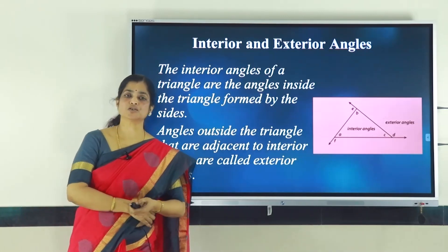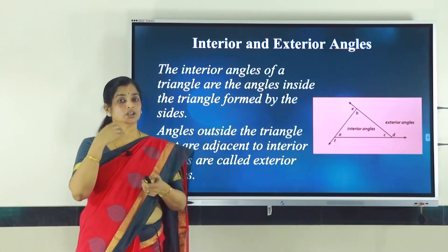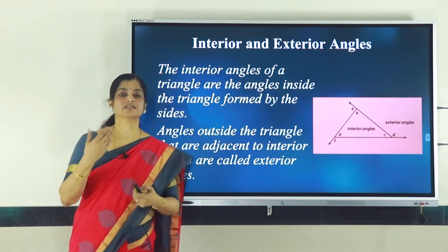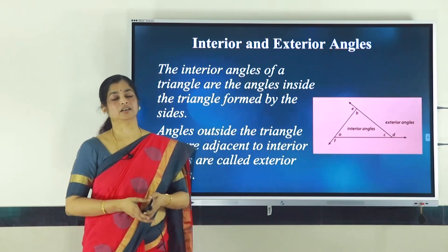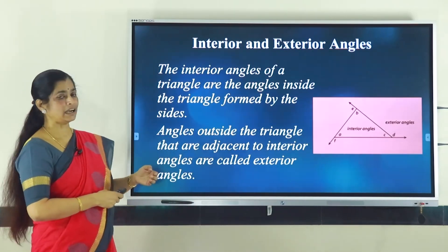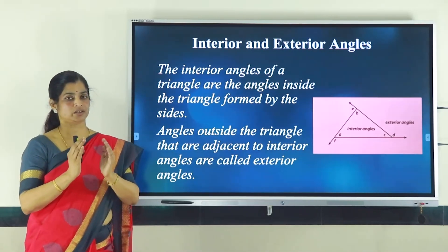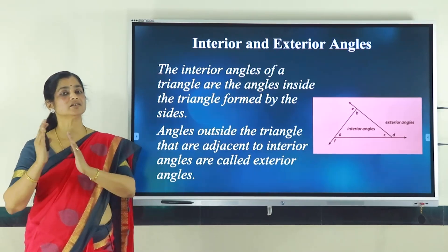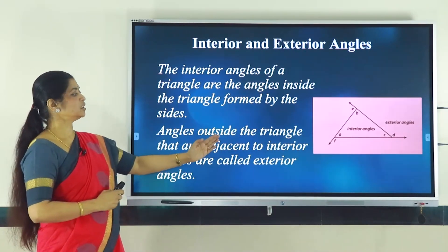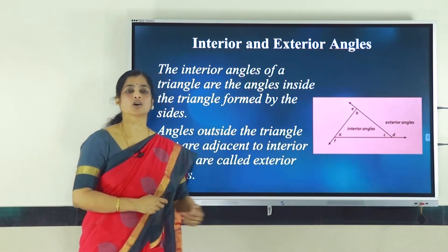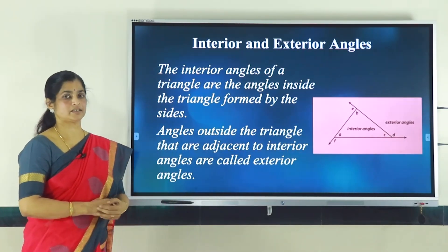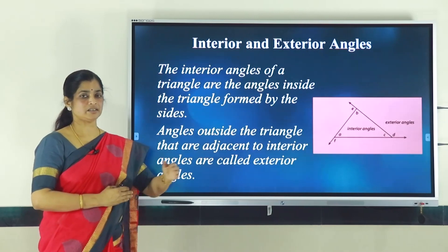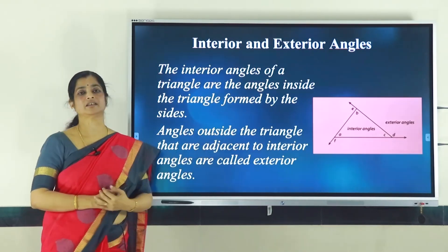Now let us study about the properties of triangle. Before learning the properties, you should know what interior angles and exterior angles of a triangle are. Interior angles of a triangle are the angles enclosed inside the triangle, and the exterior angles are those which are adjacent to the interior angles. In the figure, angles A, B, C are interior angles and angles E, F, D are exterior angles.